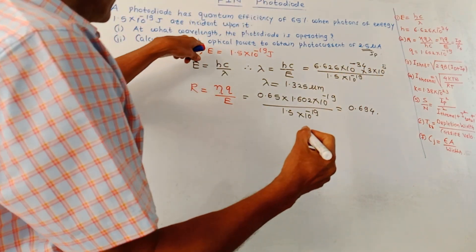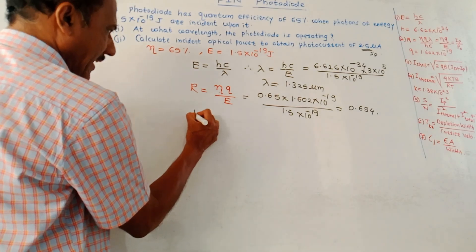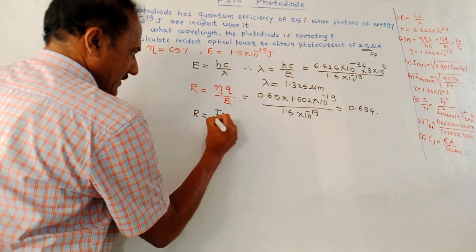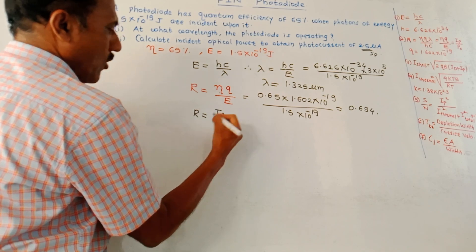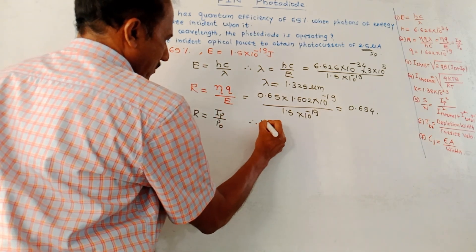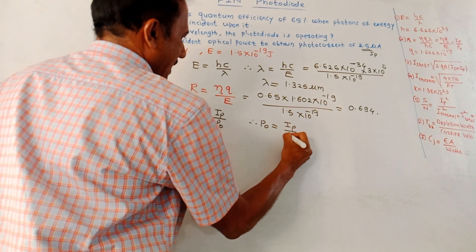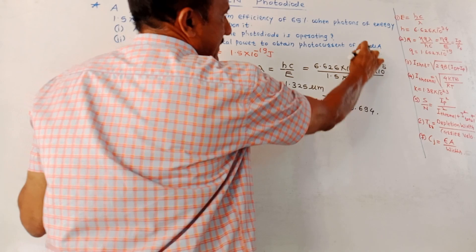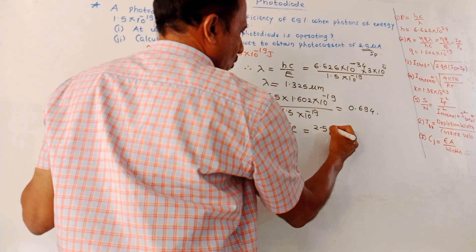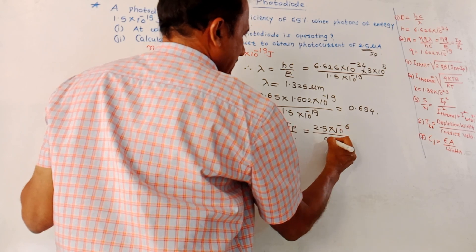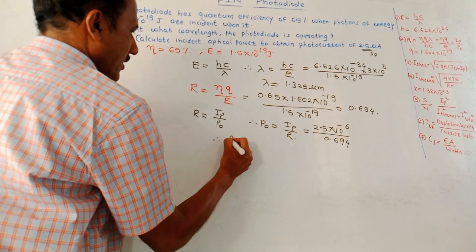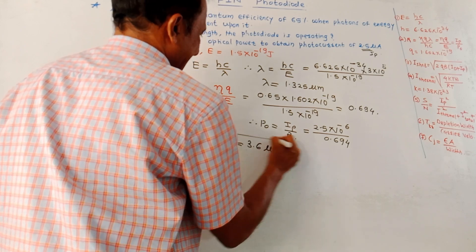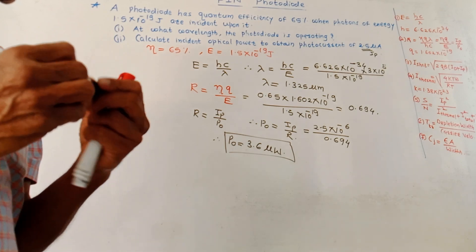Now calculate the incident optical power using r = I_P / P_0, so P_0 = I_P / r. With I_P = 2.5 × 10⁻⁶ A and r = 0.694, the incident optical power P_0 = 3.6 microwatts.